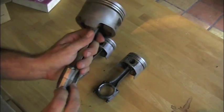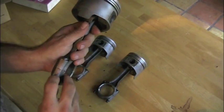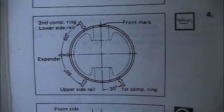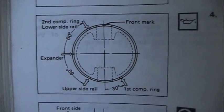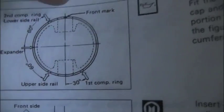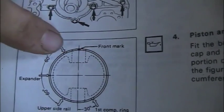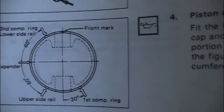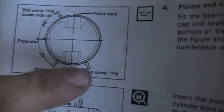What we're looking at here is the Isuzu factory service manual. This shows the top of the piston. It'll say front mark here and they're talking about this mark right here, showing that this goes to the front of the motor.